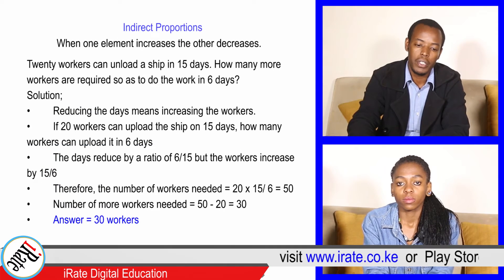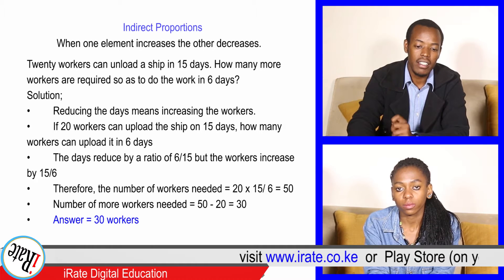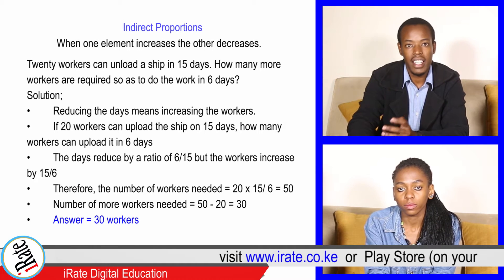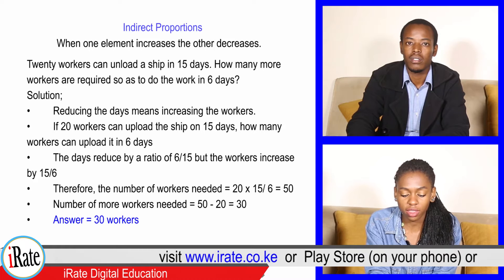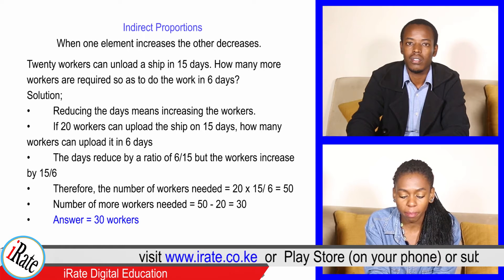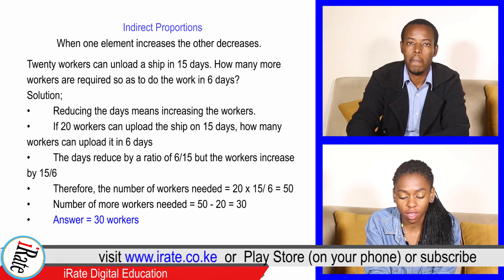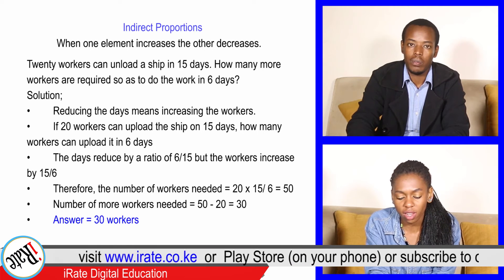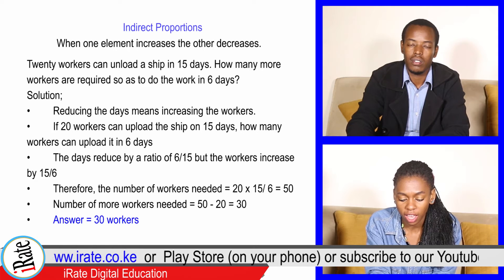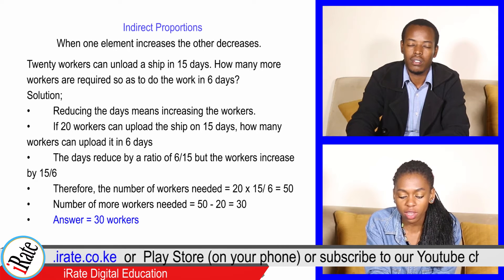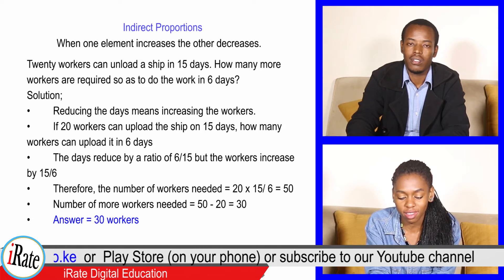Indirect proportions: when one element increases, the other decreases. Solution: reducing the days means increasing the workers. If 20 workers can unload the ship in 15 days, how many workers can unload it in 6 days?